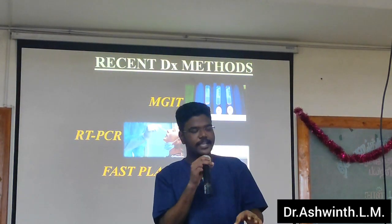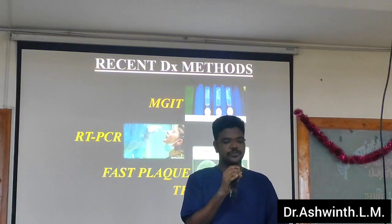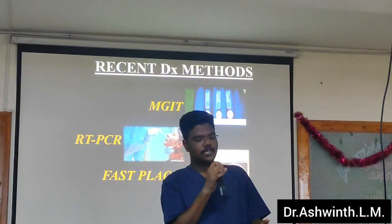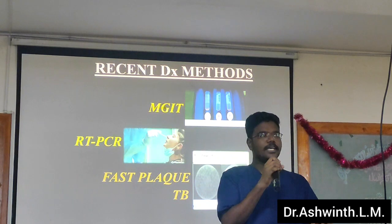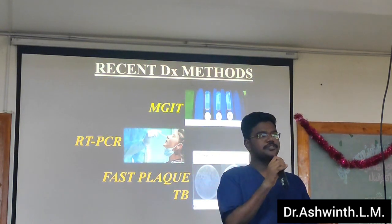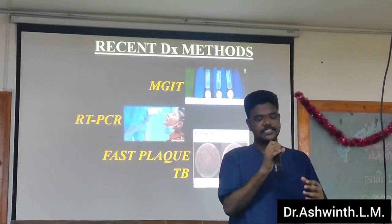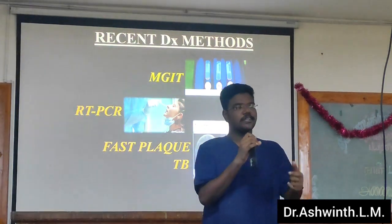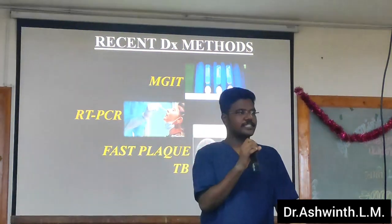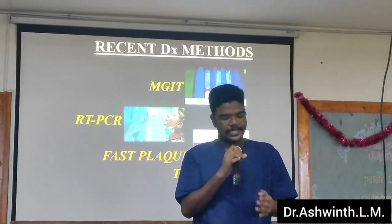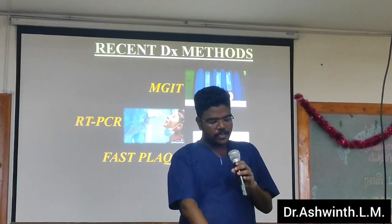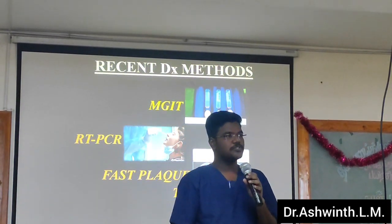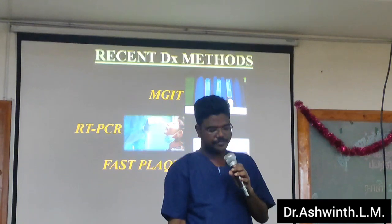These are the recent diagnostic methods which are used today. MGIT, otherwise called as Mycobacterium Growth Indicator Tube, was actually a device which was found for testing drug susceptibility to mycobacterium, but nowadays it is used for diagnosis as well. GeneXpert is a rapid diagnostic device which can be used for the diagnosis of tuberculosis.